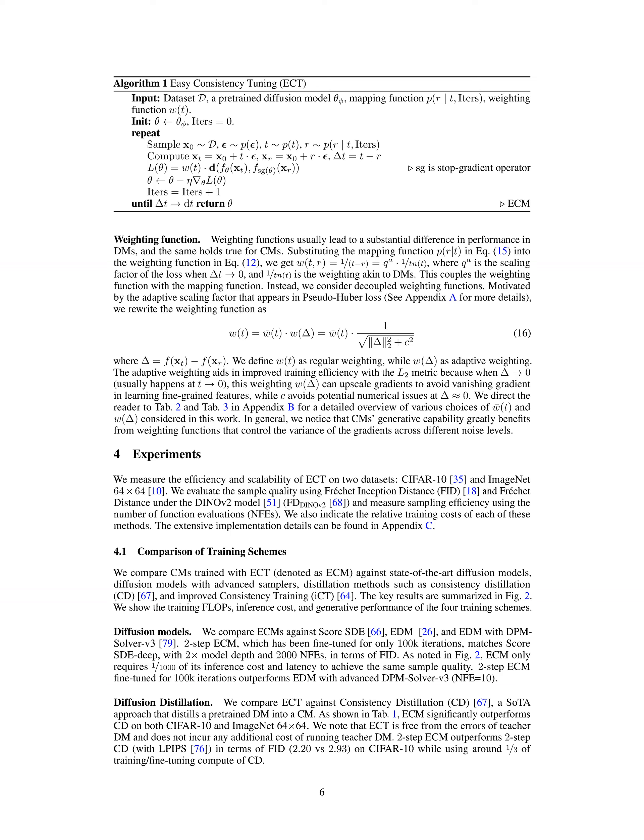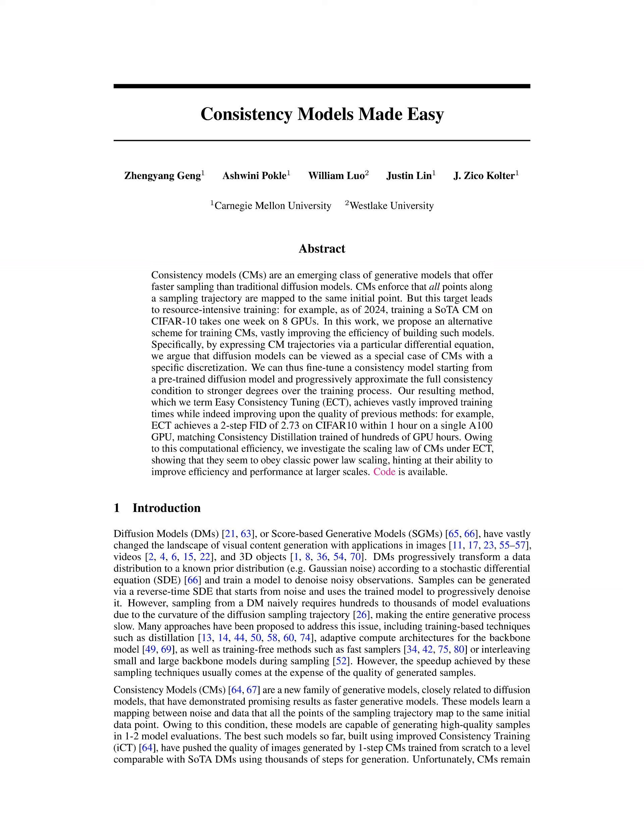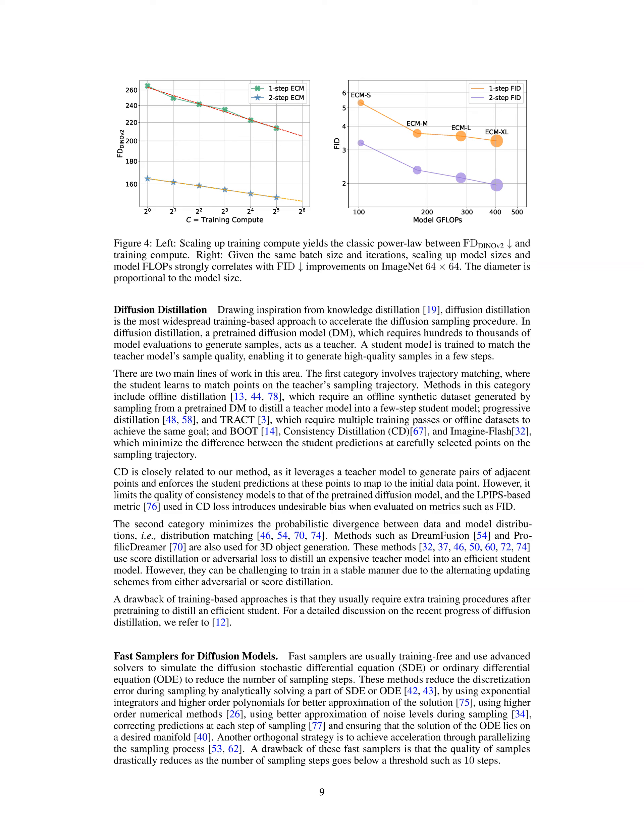The relative training costs of each method are also indicated. The experiments include a comparison of training schemes where ECT is compared against diffusion models, diffusion models with advanced samplers, distillation methods, and ICT, showcasing the generative performance, training flops, inference cost, and efficiency of the different training approaches. The results demonstrate the effectiveness of ECT in improving efficiency and performance of CMs, showcasing its ability to generate high-quality samples in one or two model steps while reducing training costs and computational resources compared to existing methods.